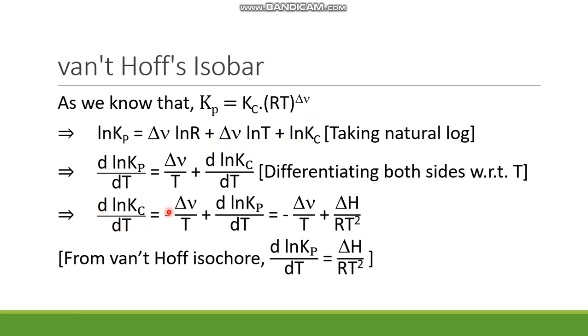If this equation is rearranged, then we can write d ln Kc by dT equals minus delta nu by T plus d ln Kp by dT.